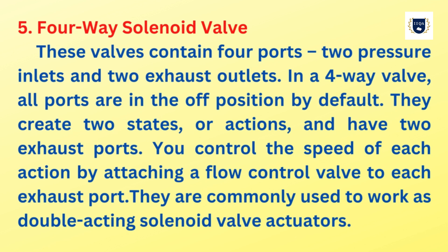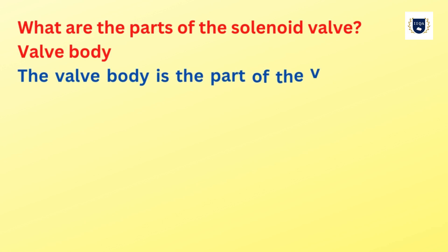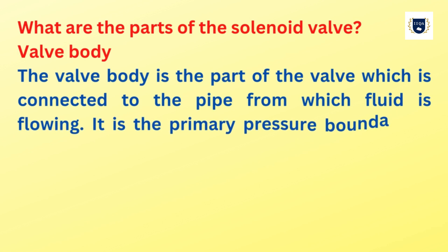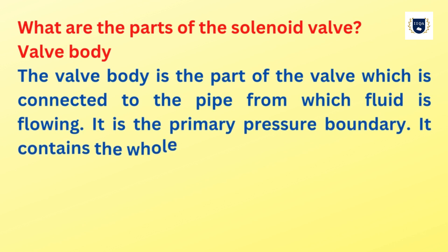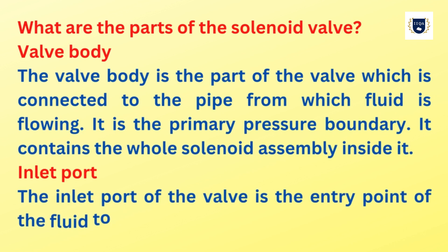What are the parts of the solenoid valve? Valve body: the valve body is the part of the valve which is connected to the pipe from which fluid is flowing. It is the primary pressure boundary and contains the whole solenoid assembly inside it. Inlet port: the inlet port of the valve is the entry point of the fluid to the valve.